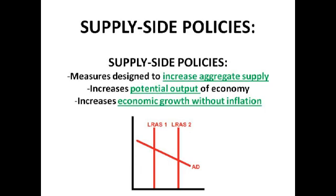So what are supply side policies? They're measures that are designed to increase aggregate supply, thus causing the long-run aggregate supply curve to shift to the right, as shown on the diagram. This means there's been an increase in the potential output of the economy, so the economy is able to produce more without inflation — we get an increase in output but a fall in the price level. Many improvements for supply side policies actually come from the private sector rather than the public sector, because firms have boosted their productivity to stay competitive in the rapidly growing market, keeping prices low by reducing average costs.